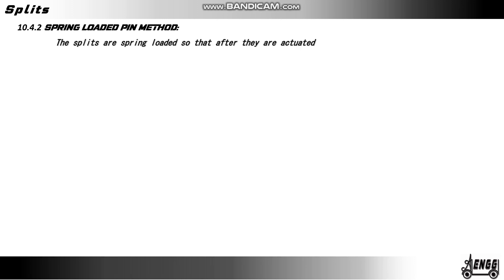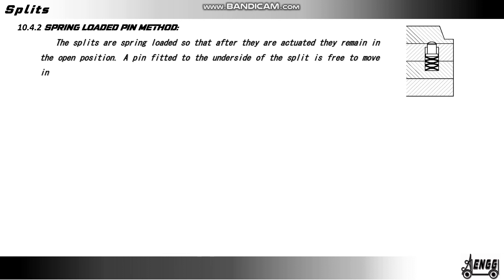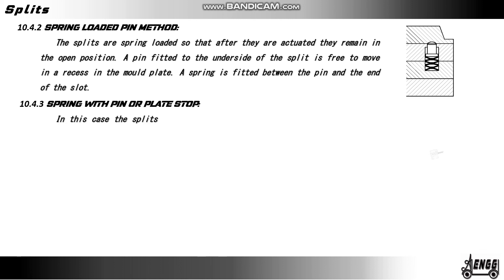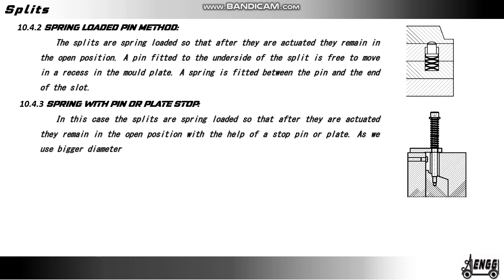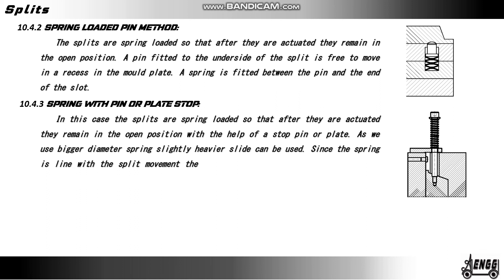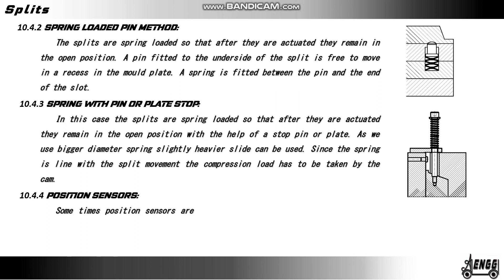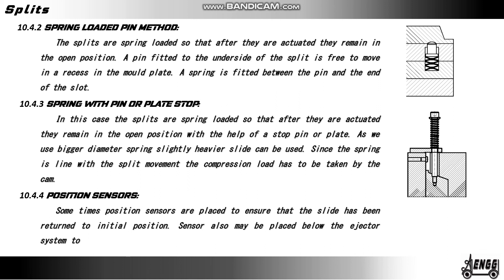Spring-loaded pin method: the splits are spring-loaded so that after they are actuated they remain in the open position. A pin fitted to the underside of the split is free to move in a recess in the mold plate; a spring is fitted between the pin and the end of the slot. Spring with pin and plate stop: in this case the splits are spring-loaded so that after actuation they remain in the open position with the help of a stop pin or plate. As a bigger diameter spring is used, slightly heavier slides can be used; since the spring is in line with the split movement, the compression load has to be taken by the cam. Position sensors: sometimes position sensors are placed to ensure that the slide has been returned to its initial position. Sensors may also be placed below the ejector system to ensure its position, especially when hydraulic knockout systems are employed.